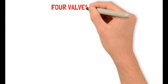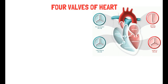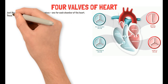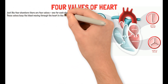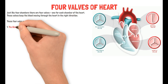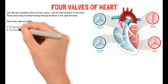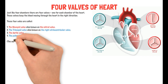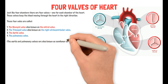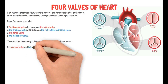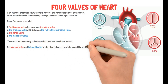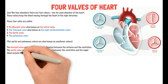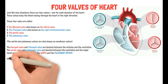Now after the four chambers, it is time for the four valves of the heart. We have a diagram on the right for your visual understanding. Just like the four chambers, there are four valves — one for each chamber — which keep the blood moving through the heart in the right direction. These four valves are: the bicuspid valve (also known as the mitral valve), the tricuspid valve (also known as the right atrioventricular valve), the aortic valve, and the pulmonary valve. The aortic and pulmonary valves are also known as semilunar valves. The bicuspid and tricuspid valves are located between the atria and the ventricles, whereas the aortic and pulmonary valves are located between the ventricles and the major blood vessels leaving the heart.